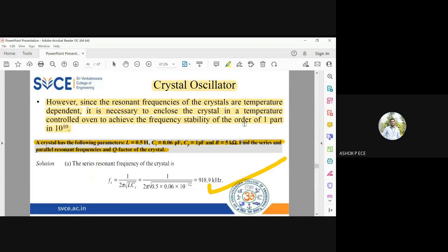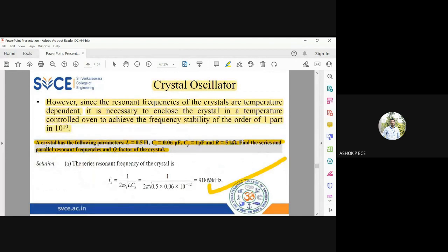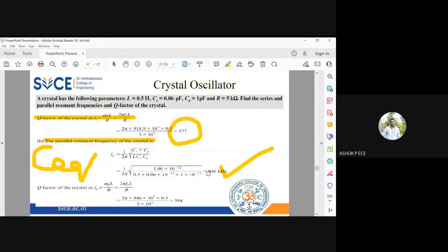And you can see both the frequencies are very close, 918.9 kilohertz and 946 kilohertz. And at parallel resonant frequency, the quality factor is given by ωP L by R, which equals 594. They are also very close.